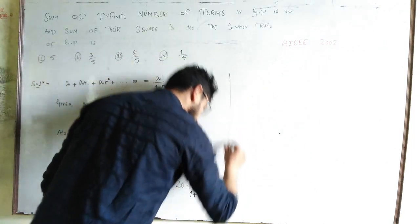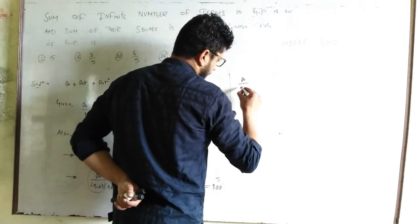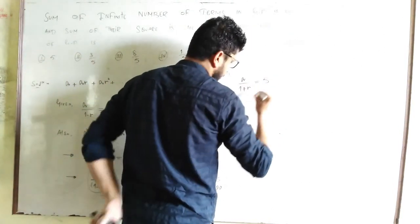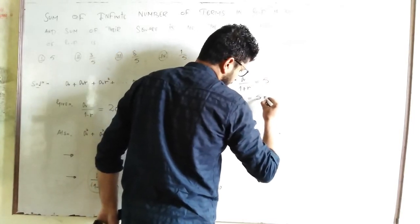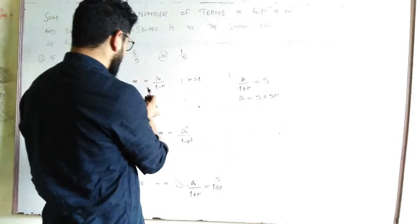So we have a/(1+r) = 5, or a = 5 + 5r. Also,